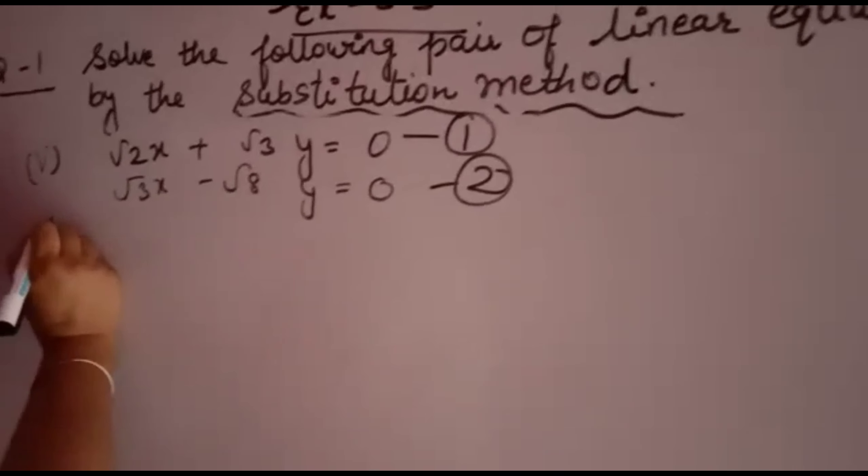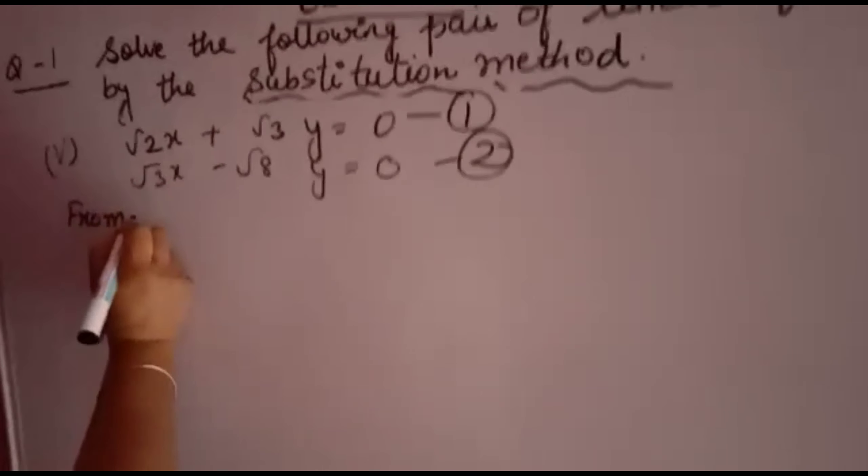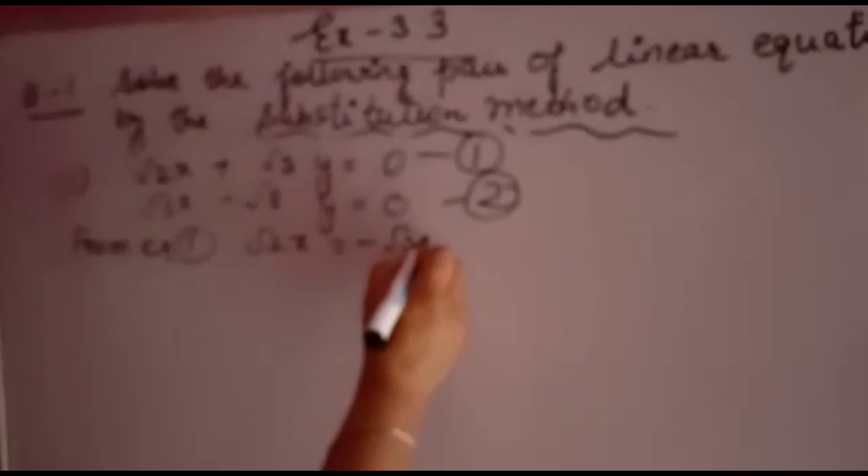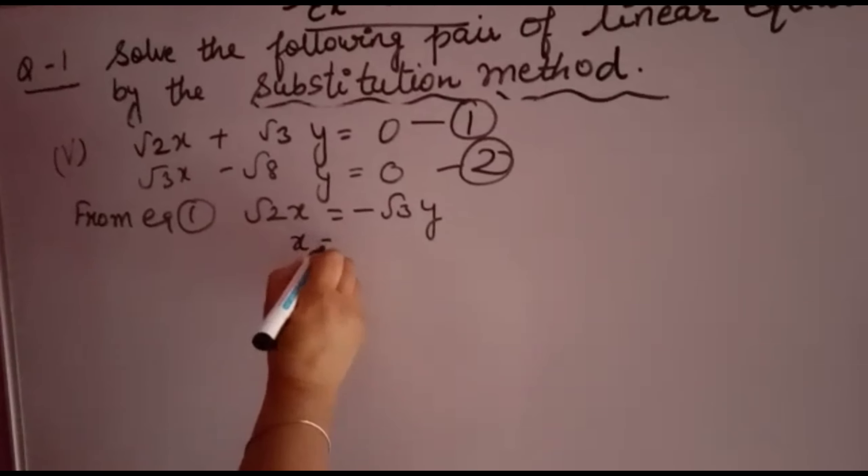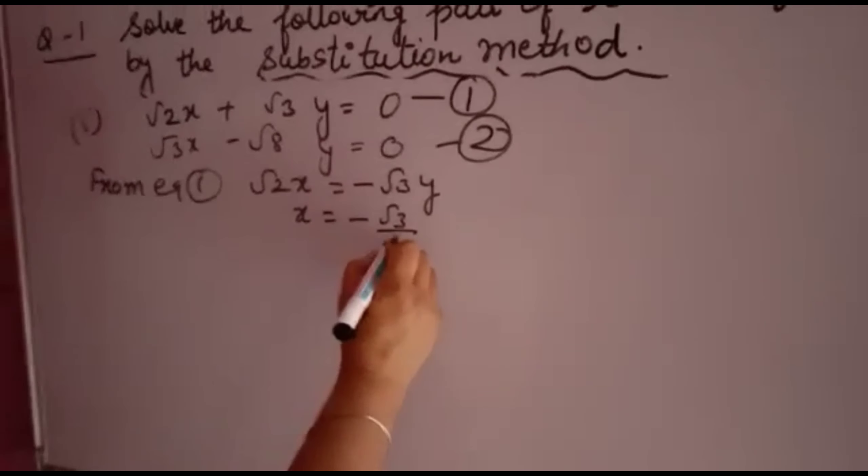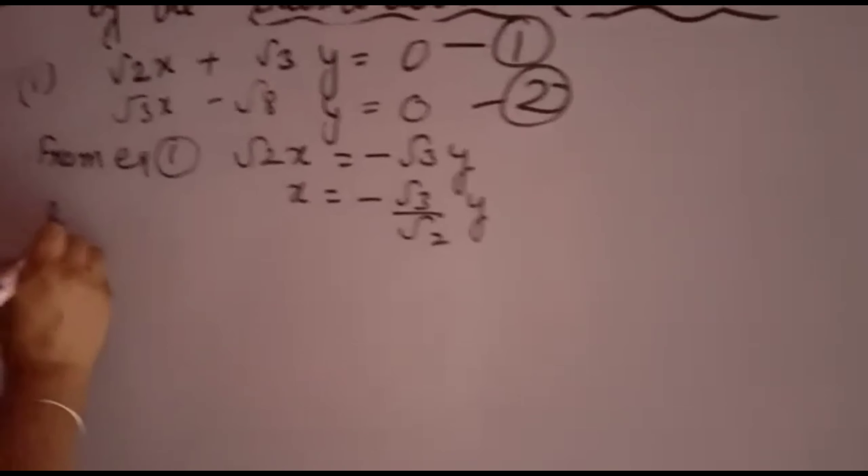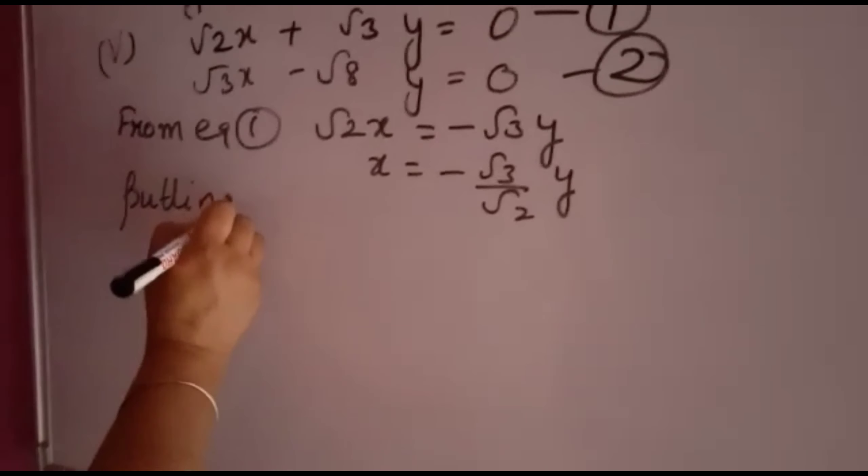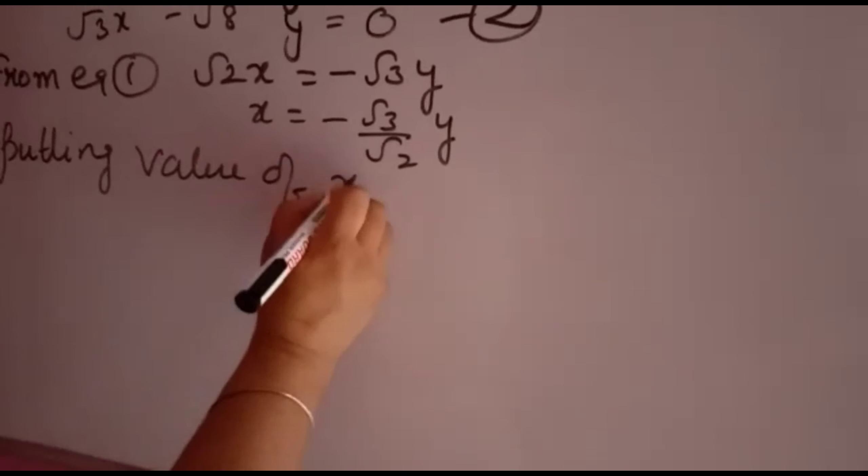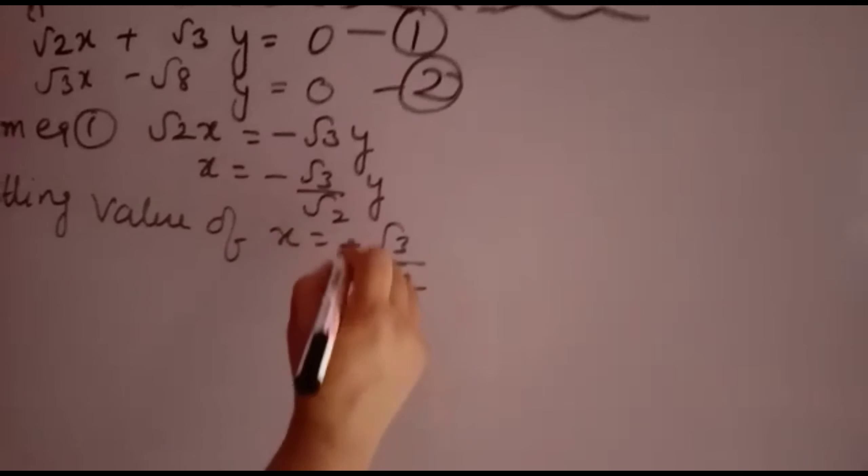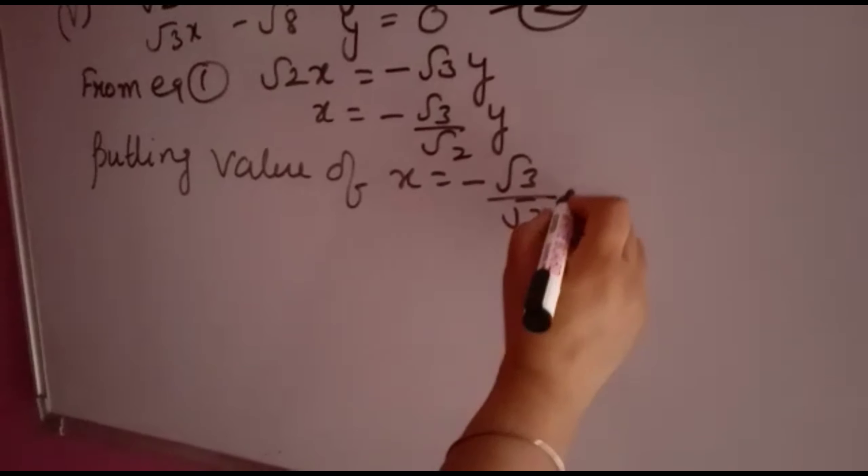From equation 1, you will take out the value of x. Move √3y to the other side, so it becomes -√3y. Then x equals -√3y/√2. You can also write this as x = -√(3/2)y. Both forms are correct.